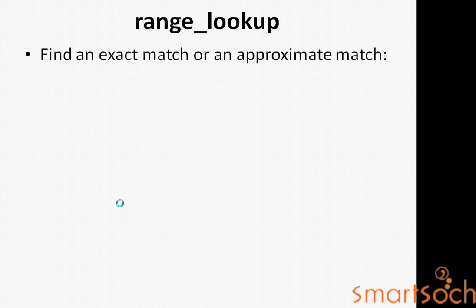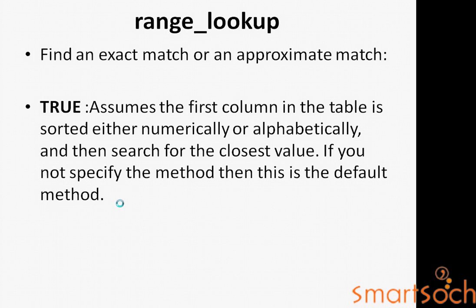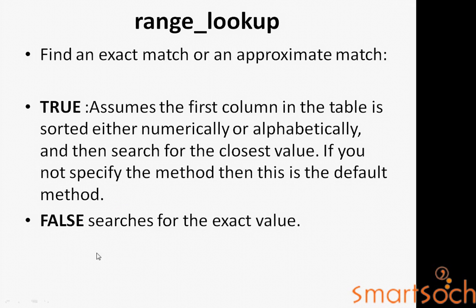For approximate match or exact match: true assumes the first column in the table is sorted numerically or alphabetically, and searches for the closest value. If you do not specify the method, this is the default. It will not find an exact value — it finds only the closest value. That is why we use false. False searches for the exact value.